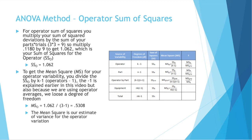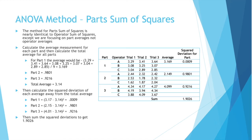To get the mean square for operator variability, divide the sum of squares operator by k minus 1 — that's operators minus 1. So 1.062 divided by 2 equals 0.5308. The mean square is our estimate of variance for operator variation. The rest of the sum of squares and mean squares values are calculated the same way; you just arrange the data differently because you're comparing different things.